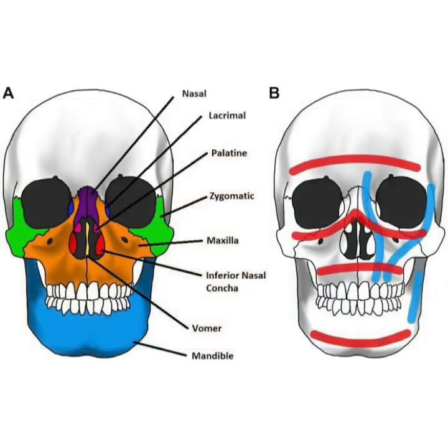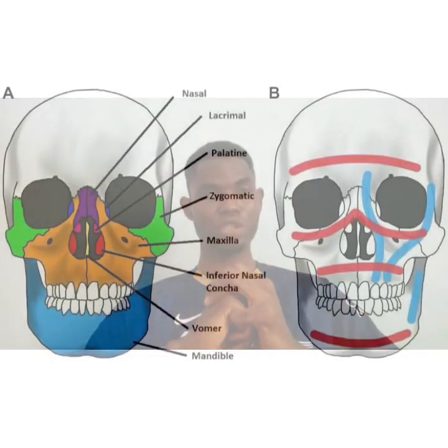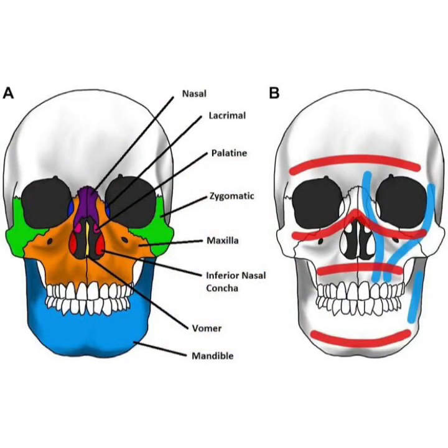The next bone is the nasal bone. The nasal bones are two in number — two slender bones located at the medial wall of the nasal cavity. The next bone is the lacrimal bone, which is the smallest bone of the facial skeleton, located at the face.